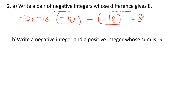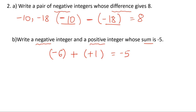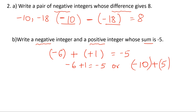The next one is: write a negative integer and a positive integer whose sum is minus 5. So we have a negative integer plus a positive integer equals minus 5. Minus 6 plus 1 equals minus 5. Or I can take minus 10 plus 5. So the negative integer and positive integer give minus 5. You can have many options again. I'll take the first one: minus 6 and 1.